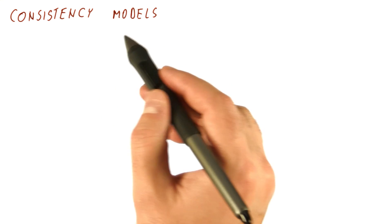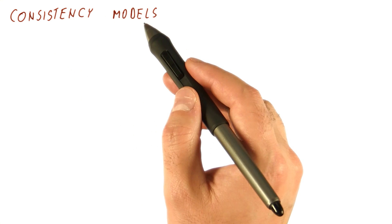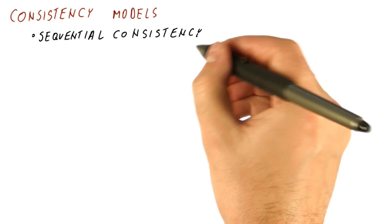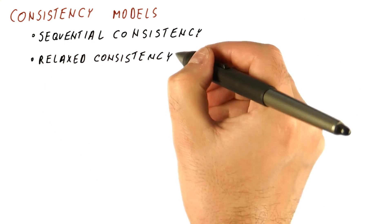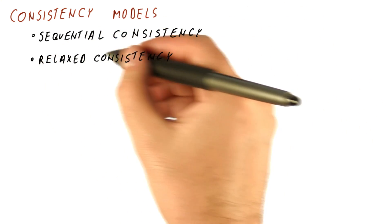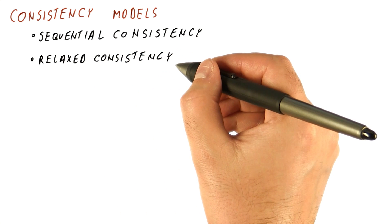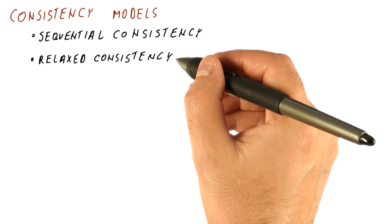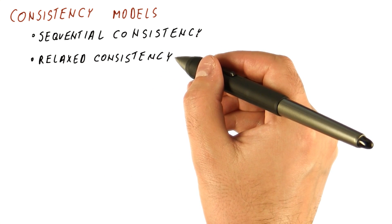So finally, let's take a look at what kinds of consistency are there. We know that there is sequential consistency, and then there is a family of relaxed consistency models, which are allowed to violate one or more of those four ordering rules.